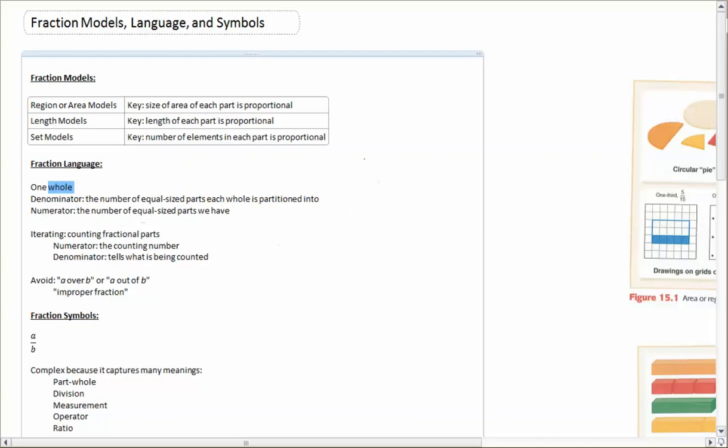For example, if I say, would you prefer to have one half of a pizza or one quarter of a pizza? And you would say, well of course one half, right? It's more pizza. But if we have different sized wholes, for example...